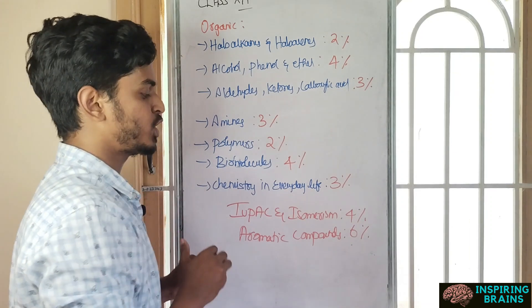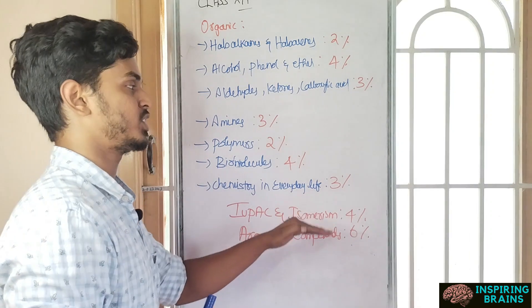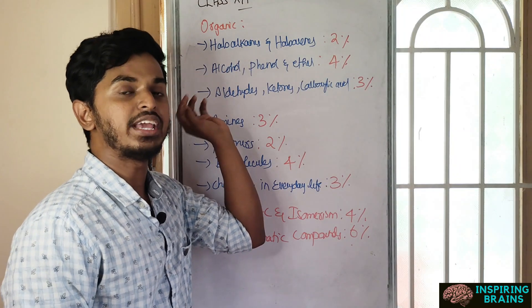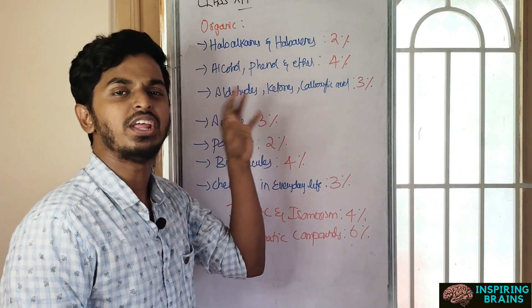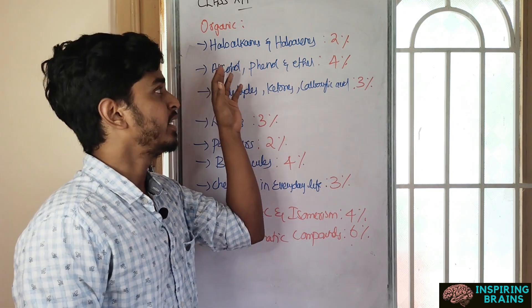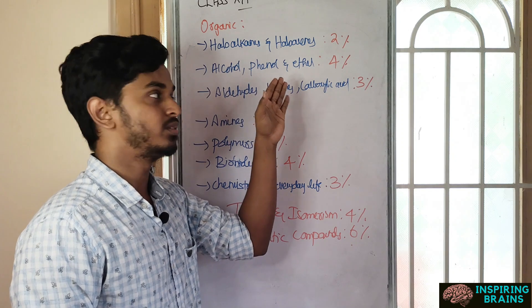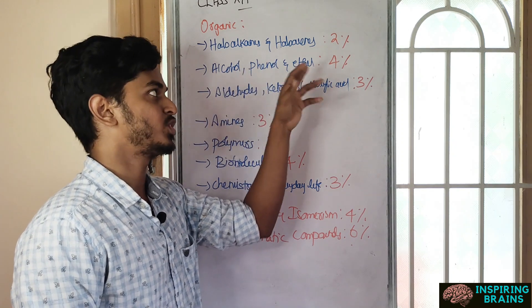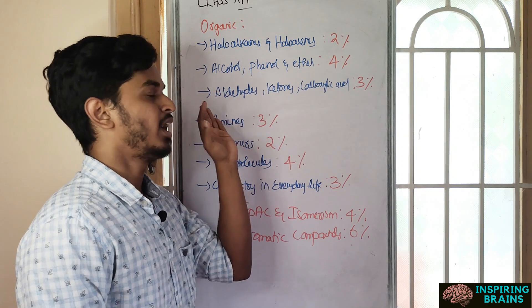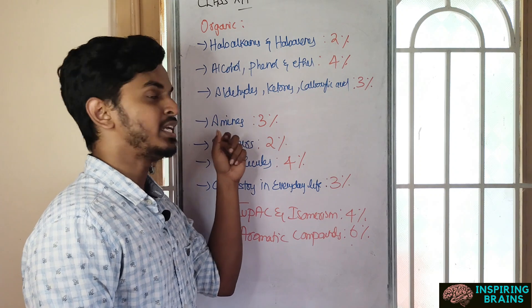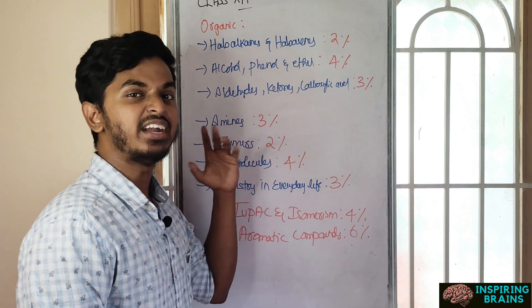Haloalkanes and haloarenes is somewhat easier but just 2 percentage, so you can give last preference. Alcohol phenol and ether is an important unit with some basics, it's 4 percentage. Aldehydes ketones carboxylic acid - again you can study. Amines - organic nitrogen compounds, you can relate and study.